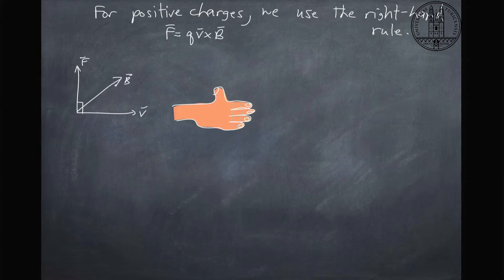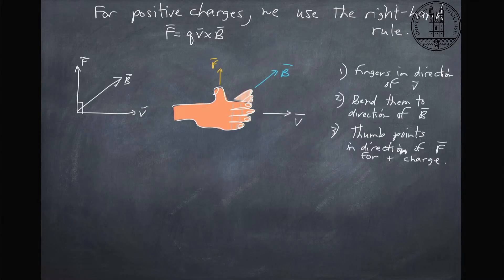Well, to figure this out, we would use the right-hand rule for positive charges. The way it works is you put your fingers in the direction of the velocity, then bend them into the direction of the magnetic field, and your thumb points upward, in this case, in the direction of the force. So the force is perpendicular to both the velocity and magnetic field.